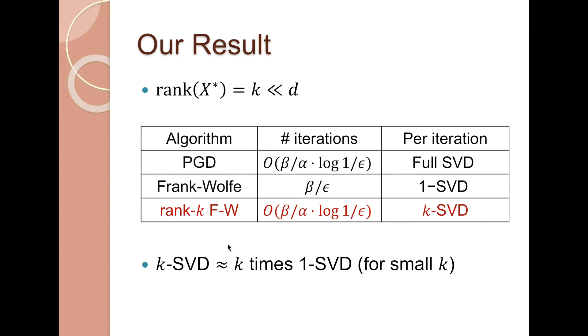It was previously shown that computing k-SVD is roughly the same as computing 1-SVD for k times, for relatively small k. So this is still much more efficient than doing a full SVD if k is much smaller than d.